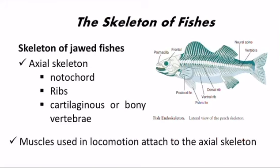Skeleton of jawed fishes: Most jawed fishes have an axial skeleton. The axial skeleton is named as such because it forms a longitudinal axis of the body. The axial skeleton includes a notochord, ribs, and cartilaginous or bony vertebrae. Muscles used in locomotion attach to the axial skeleton, as seen here in the diagram of the fish.